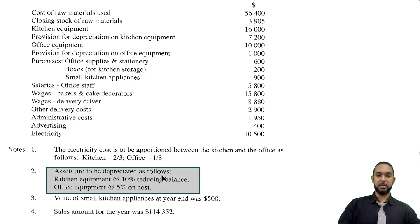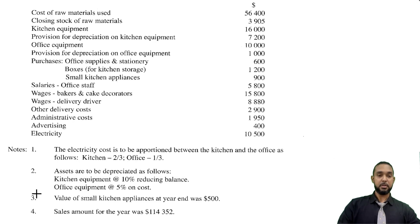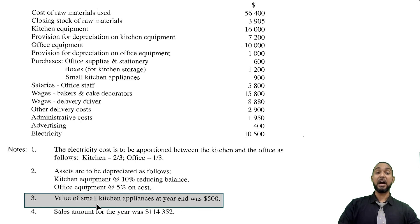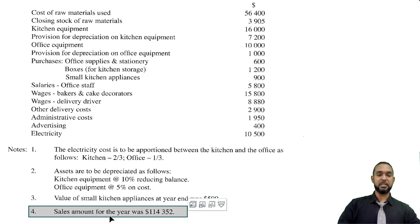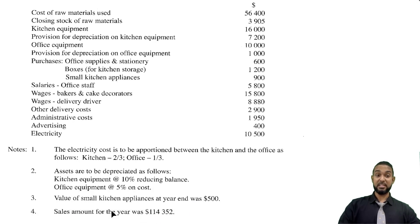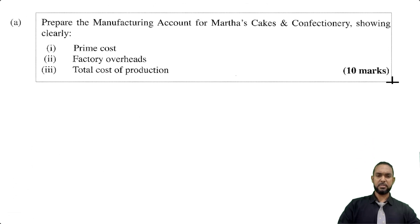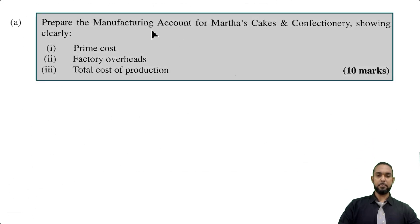Next, assets are to be depreciated as follows: kitchen equipment at 10% reducing balance, office equipment at 5% on cost. Item three: the value of small kitchen appliances at year end was $500. We also have the sales amount for the year of $114,352. The question asks us to prepare the manufacturing account for Martha's Cakes and Confectionary showing clearly prime cost, factory overheads, and total cost of production.